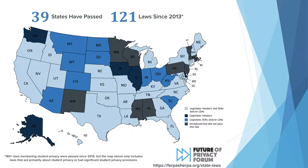We are now up to 39 states passing 121 student privacy laws specifically since 2013. If you count laws that just mention student privacy, you can add about another 40 to 50 laws. We've had well over 700 bills introduced in all 50 states on student privacy, and at one point there were eight federal bills on student privacy all active at the same time.